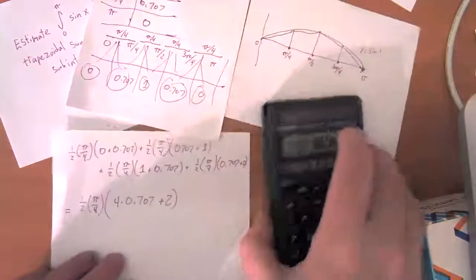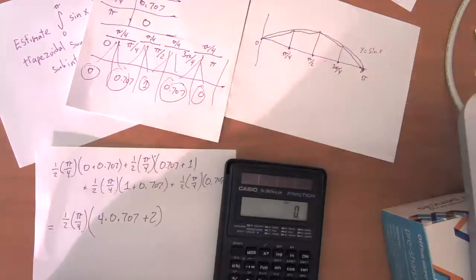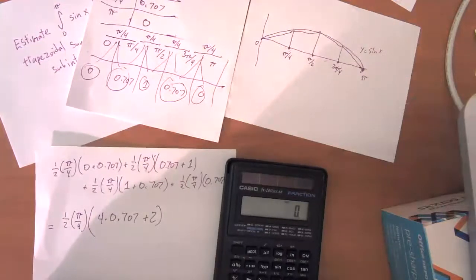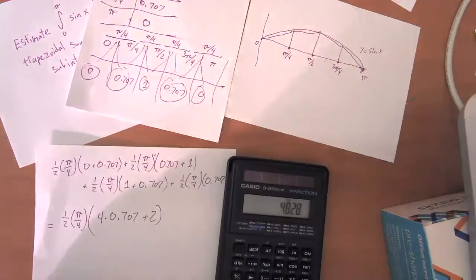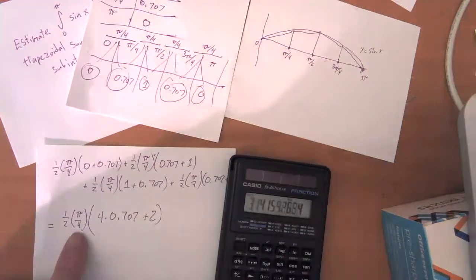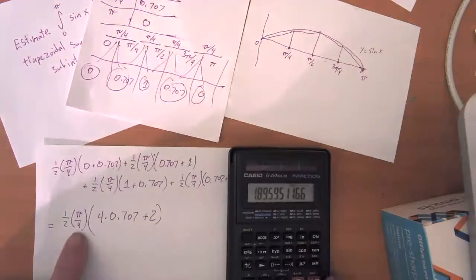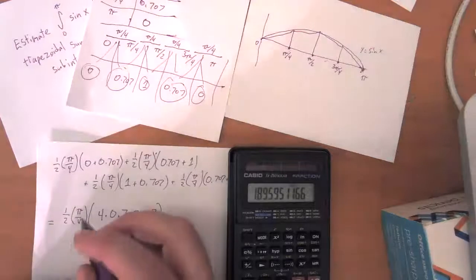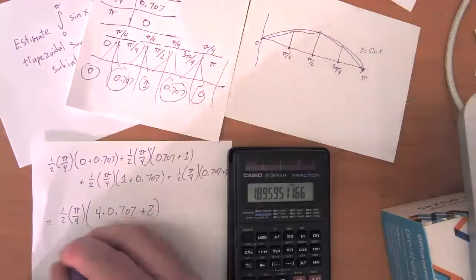And so let's add that together. So 0.707 times four plus two. And then I want to multiply that by pi, and basically I want to divide by eight. And so my total area there is estimated as 1.896.